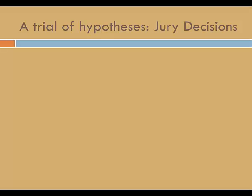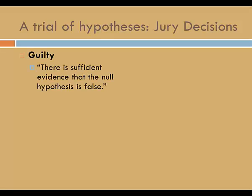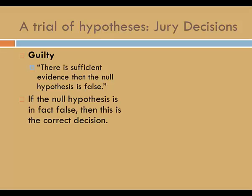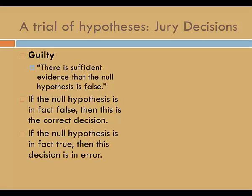So there are two possible decisions for the jury: guilty or not guilty. In terms of a hypothesis test, guilty translates to 'there is sufficient evidence that the null hypothesis is false.' If the null hypothesis is in fact false, then this is the correct decision. On the other hand, if the null hypothesis is in fact true, then this decision is in error.